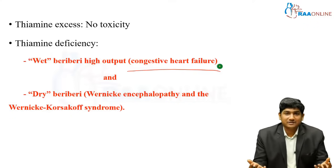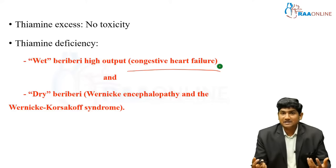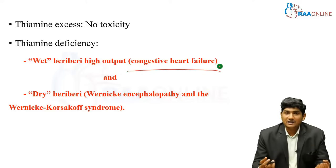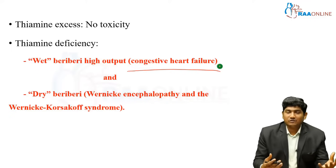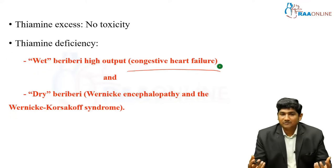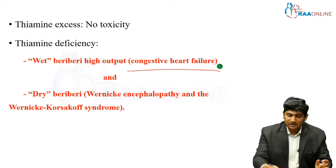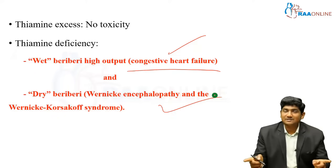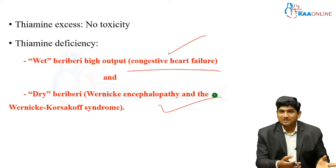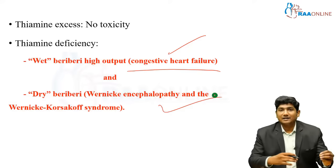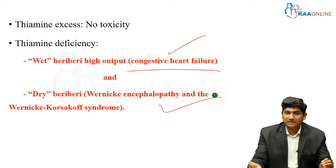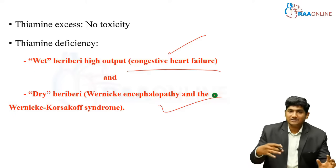I have two different questions here. Why is it named wet beriberi and dry beriberi? Who are the patients more prone for wet beriberi, and who are more prone for dry beriberi? Both are thiamine deficiency only, right? So why is one group of patients getting wet beriberi and another getting dry beriberi? Superficially, wet beriberi looks more like a cardiovascular pathology, and dry beriberi more like a neuronal pathology — two different organ systems. But it's just thiamine deficiency. How can one thiamine deficiency produce cardiovascular symptoms in one group and neurological symptoms in another?